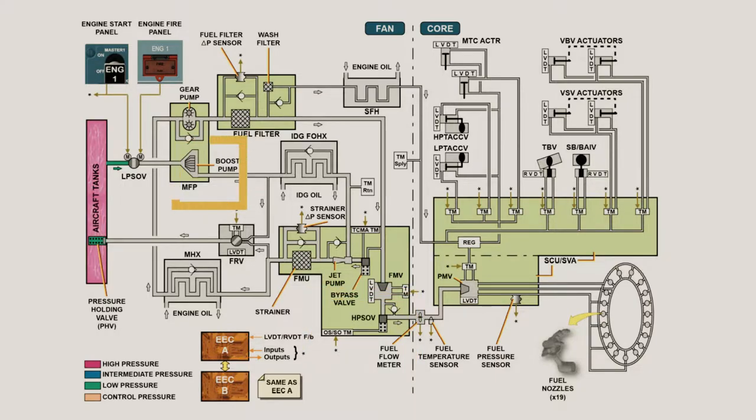During starting, the boost pump pressurizes the fuel at low pressure and sends it through the IDG fuel oil heat exchanger to the FMU. The fuel passes through the jet pump and the strainer of the FMU before going through the main heat exchanger.